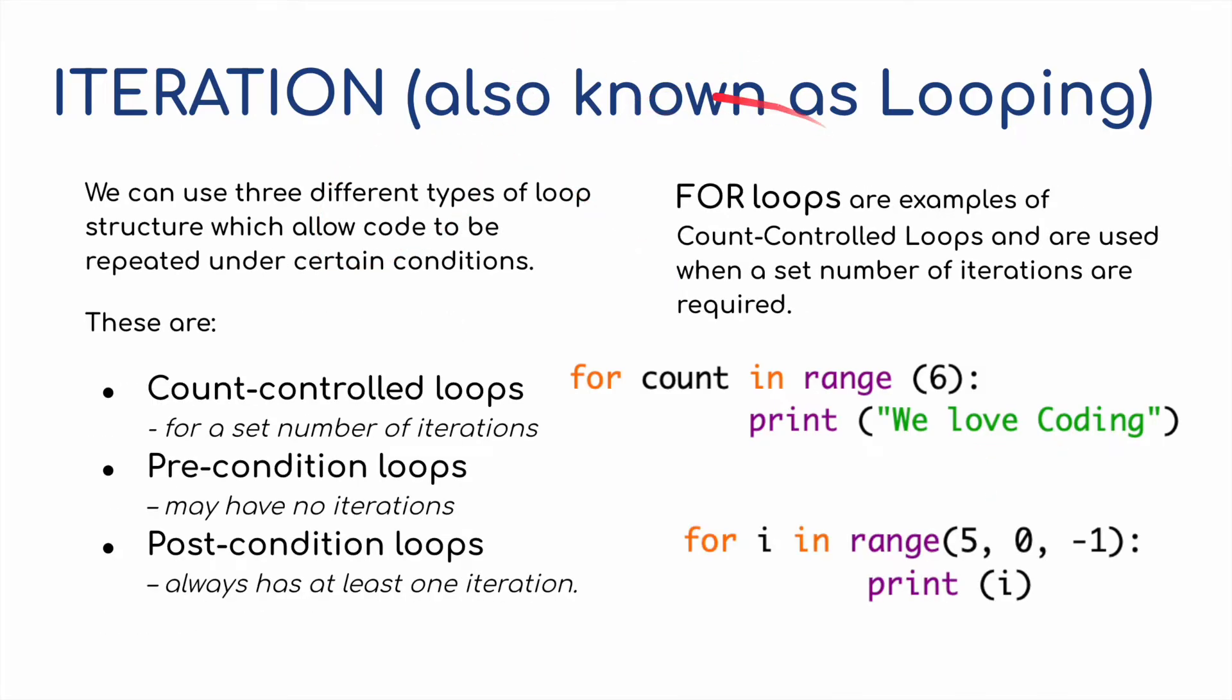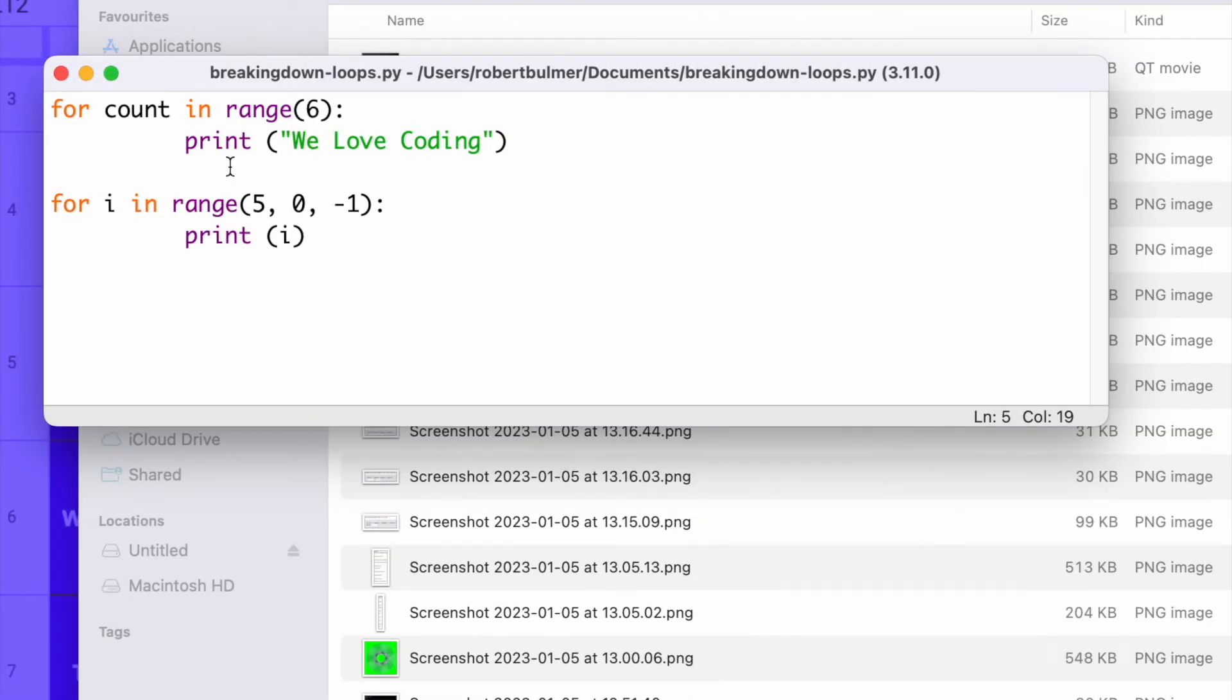Within looping, we've got three different types of loop structures, which allow code to repeat under certain conditions. We have a count control loop for a set number of repetitions or iterations. We have a precondition loop, which might have no iterations, and we have a postcondition loop, which always has at least one iteration. We spotted earlier the count in range of six, so we can repeat this six times. But now we've got for i in range five, zero, minus one, print i. So if I run this in Python, I'll show you what's happening. We can control what is in this particular parentheses. I've opened Python and added the two loops.